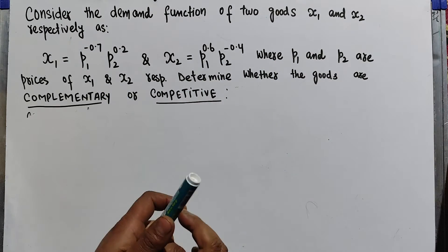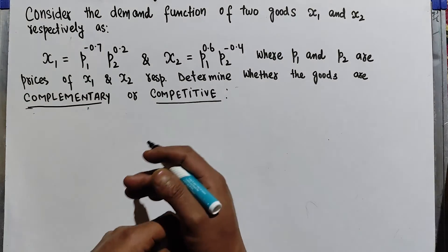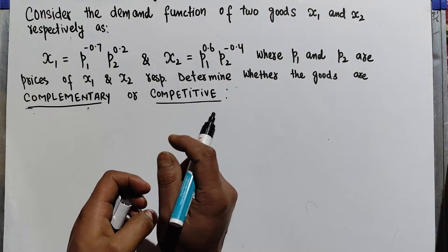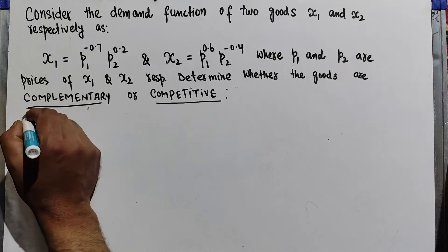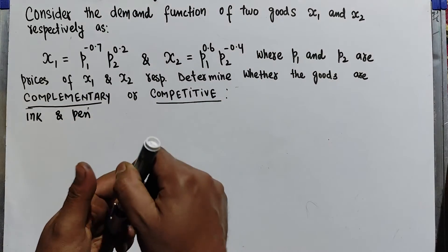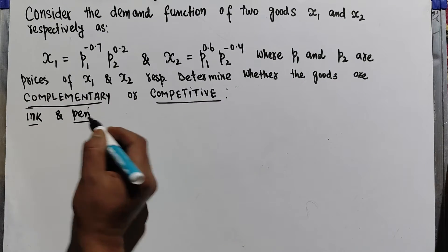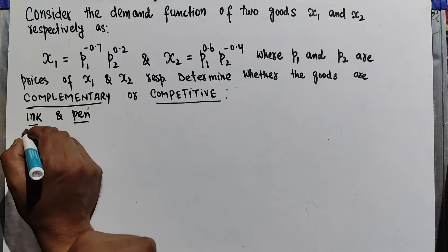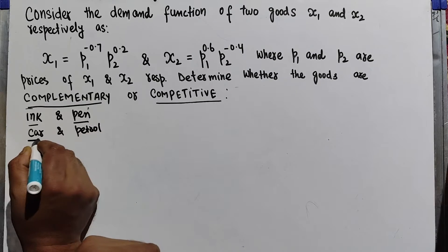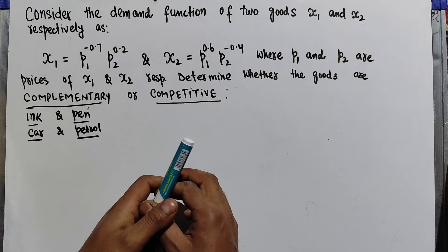We need to determine whether the goods are complementary or competitive. Two goods are said to be complementary when they are used together or demanded jointly. For example, ink and pen are complementary goods. Similarly, car and petrol are demanded jointly, so they are also complementary goods.